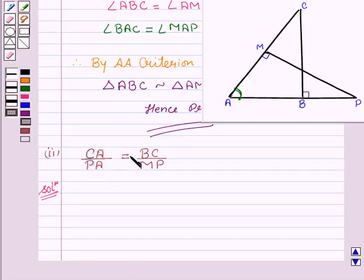Now as we have already seen in the first part that triangle ABC is similar to triangle AMP proved above.